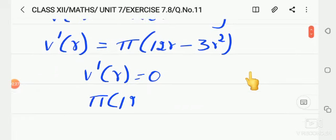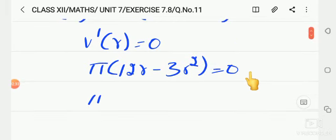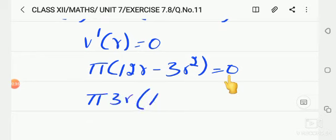So, pi into 12r minus 3 r square is equal to 0. Here common factor is 3r. Taking 3r common, inside the bracket we have 4 minus r. So either r equals 0 or r equals 4.